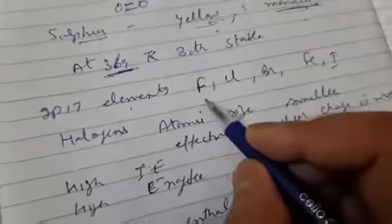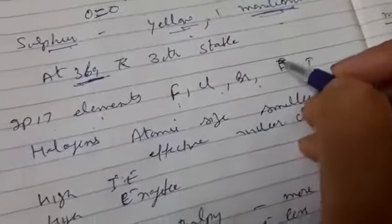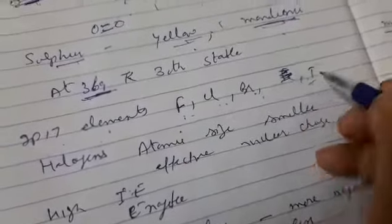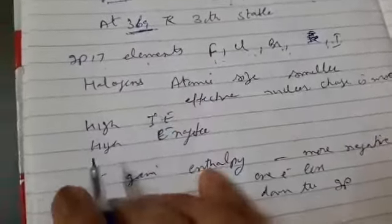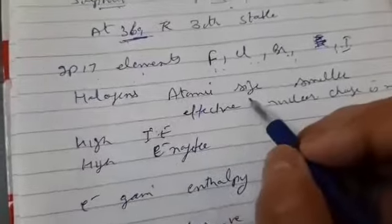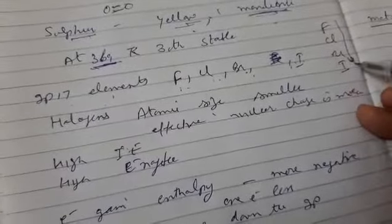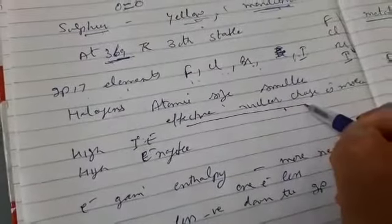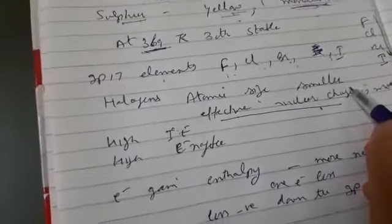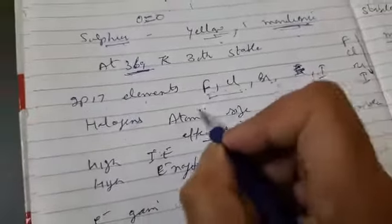Group 17 elements are the halogens: fluorine, chlorine, bromine, and iodine. These elements are present in group 17, the halogen family. Regarding atomic size, when we move down the group from fluorine to iodine, size increases. However, compared to other groups, halogens are smaller in size because they have a higher effective nuclear charge.